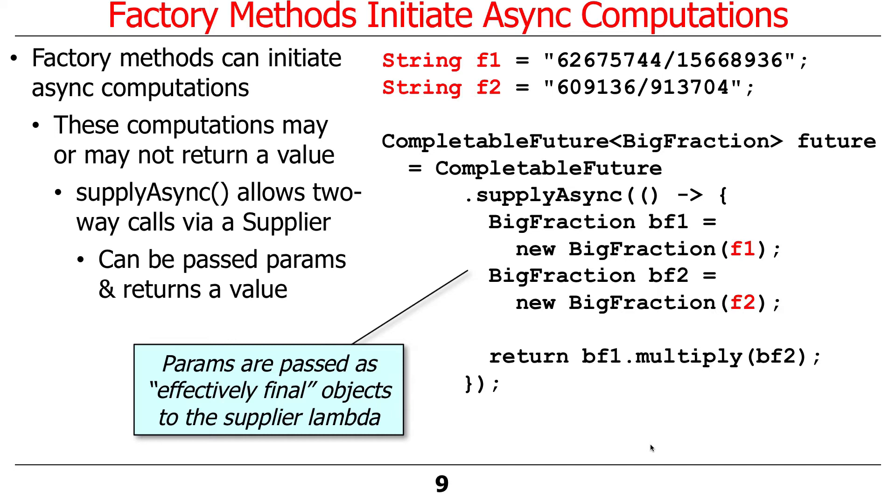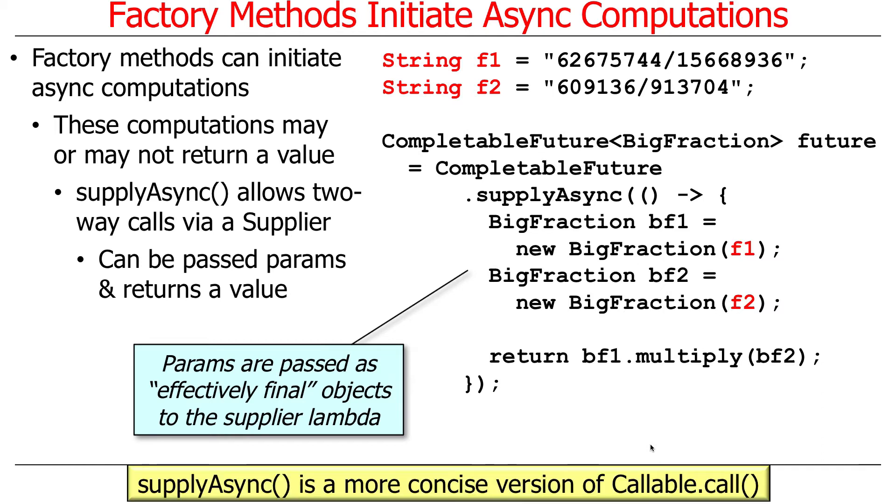The parameters are passed as so-called effectively final objects. See, here's F1 and F2. These come from up here. These are outside of the scope of the lambda expression, but they're what are called effectively final because we don't change them anywhere. So they're bound, and we can use their values here without having to worry about them being changed because they don't get set anywhere. Supply async is essentially a more concise version of something called callable, which comes from the Java executor framework.